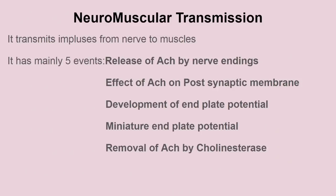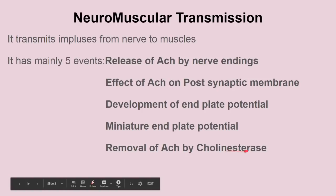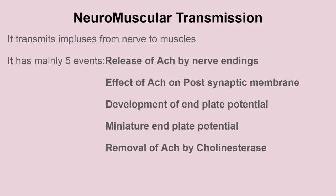Now how the impulses actually transmit from the neuron to the muscle. The skeletal muscle is stimulated only through its nerve, and the neuromuscular junction transmits the impulses from the nerve to the muscle. Five events sequentially occur for the transmission of impulses: first, the release of acetylcholine by the nerve endings; second, the effect of acetylcholine on the postsynaptic membrane; third, development of end plate potential; fourth, miniature end plate potential; and fifth, removal of acetylcholine by acetylcholinesterase enzyme.